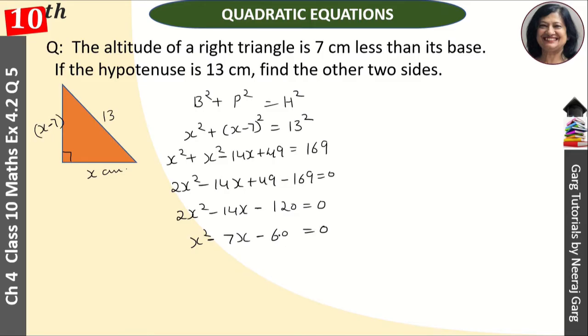Now, we have to make 60 factors in which the difference will be 7. We have to think about 12 into 5, and 12 minus 5 is 7. So minus is 12 and plus is 5. So this is x squared minus 12x plus 5x minus 60.